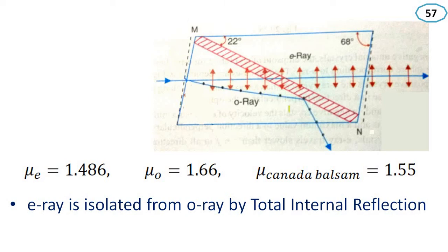The ERA is isolated from the ORA by the principle of total internal reflection. When light travels from a denser medium to a rarer medium, it is reflected at the surface of the rarer medium. Canada balsam acts as a rare medium for the ORA — which has a refractive index of 1.66 — but it is a denser medium for the ERA.